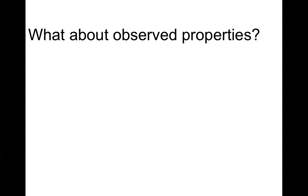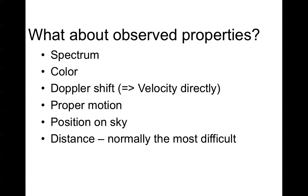The observed properties, however, are the things you can actually measure, and we have to get from one to the other. Observed properties include the spectrum of the star, the color or colors of the star, the Doppler shift of the radiation from the star as seen by the shift of its lines, its proper motion — that is, how fast its position on the sky is changing — its position on the sky, and its distance. Of these quantities, distance is normally the most difficult to measure, and that's what we'll be talking about here.